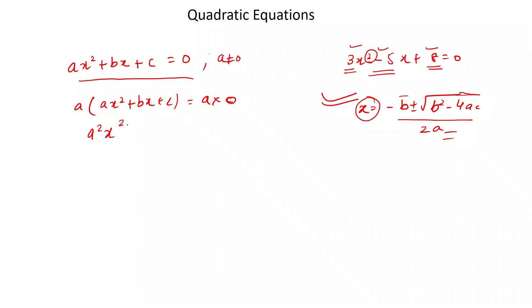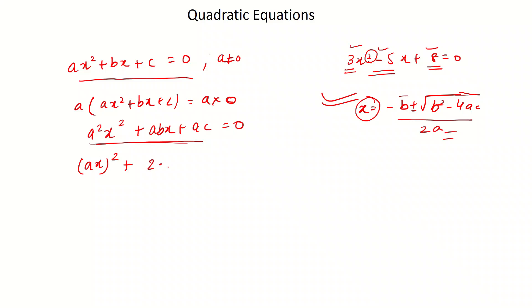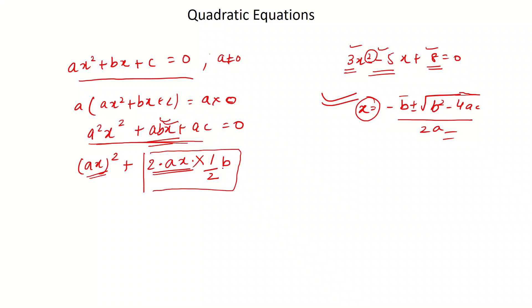On multiplication we get: a squared x squared plus abx plus ac equals zero. Now we make a perfect square out of this expression. a squared x squared can be written as (ax) squared. We need a term of the form 2·a·b, and we adjust the coefficient to get the 2ab form by multiplying appropriately, giving us 2ab.